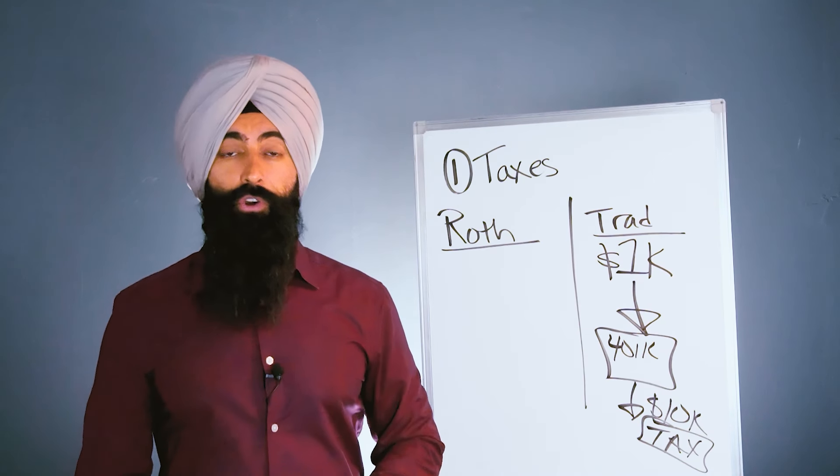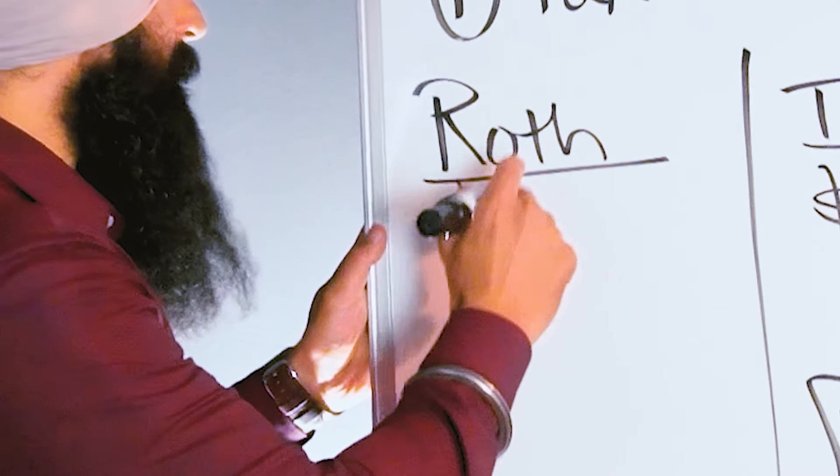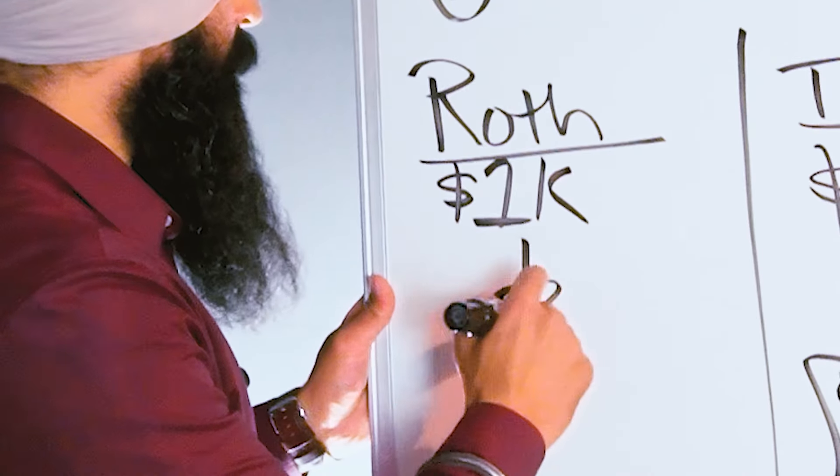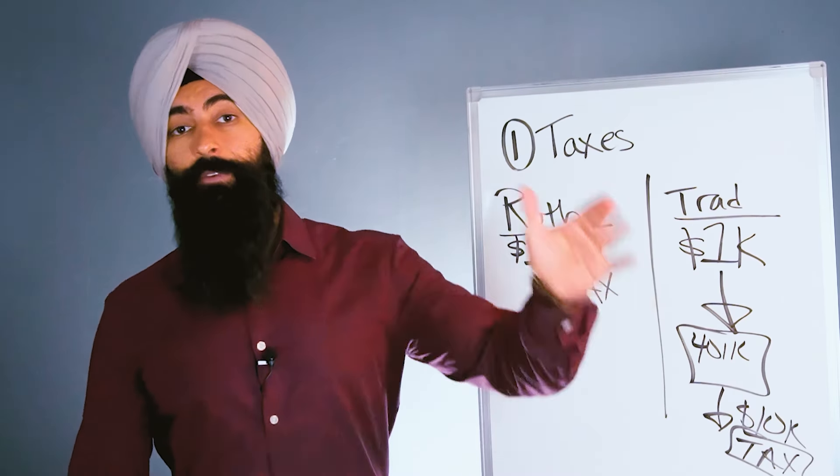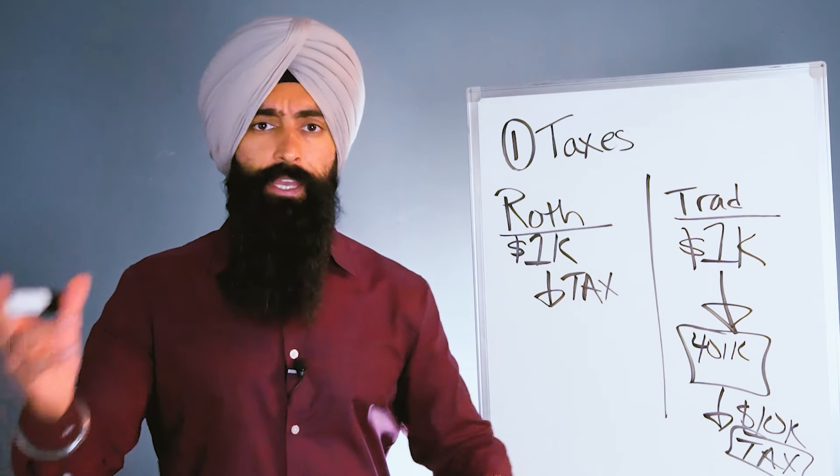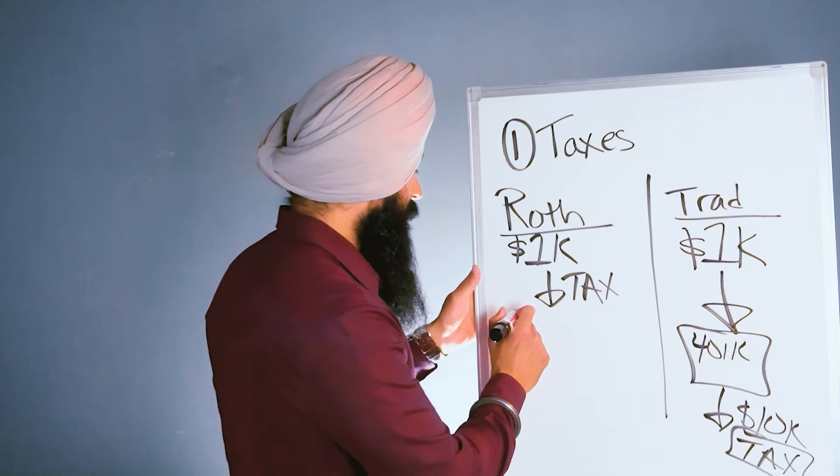The Roth works a little bit different. Now you make that same $1,000 and you want to invest this money into a 401k, but before you do, you pay your taxes. So the money is taxed before it goes in. Depending on what your tax rate is, meaning how much money you make, you might be paying say 30% in taxes, so now only $700 goes into the 401k.